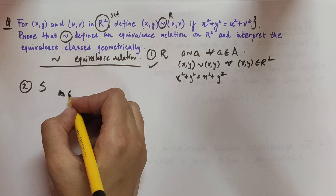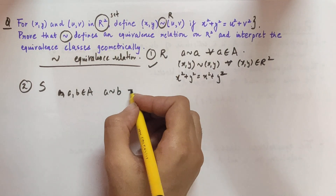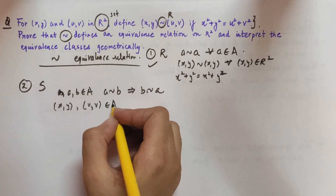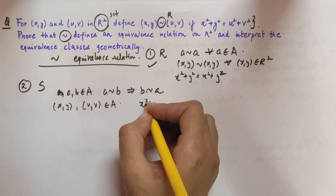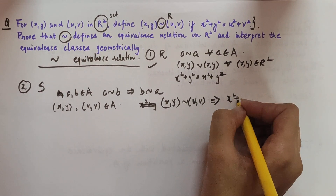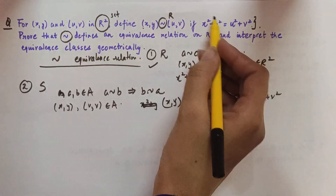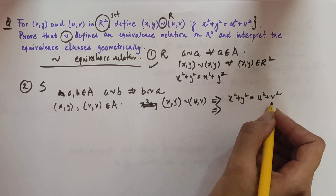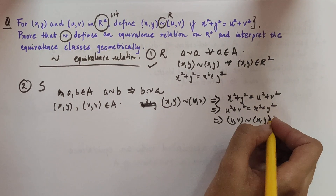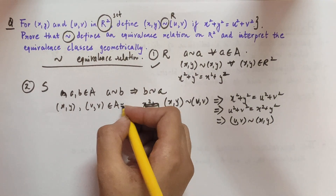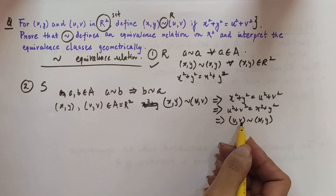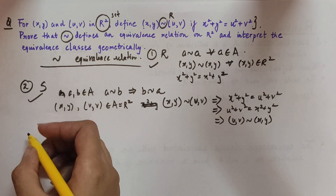For symmetric: suppose (x, y) and (u, v) are two elements of R². Assume (x, y) ~ (u, v), which implies x² + y² = u² + v². This implies u² + v² = x² + y², which means (u, v) ~ (x, y). So if one element is related to another, the reverse also holds. The relation is symmetric.